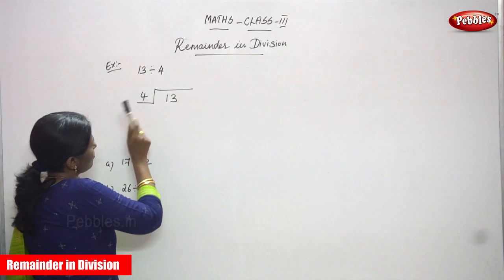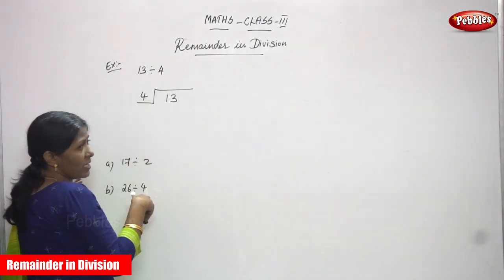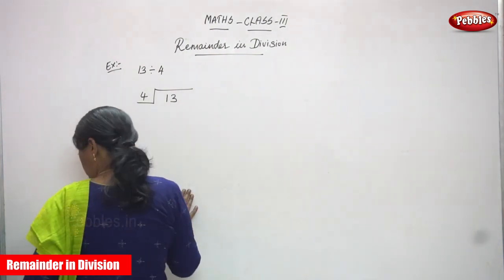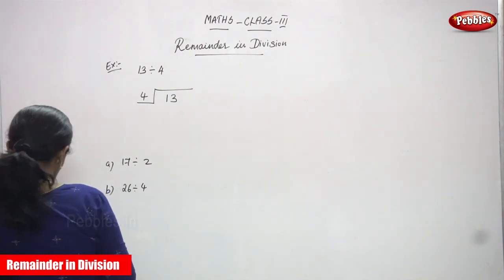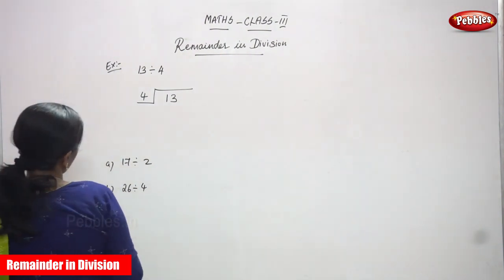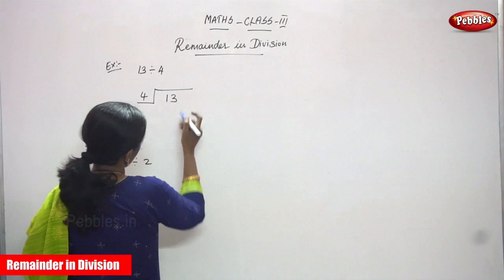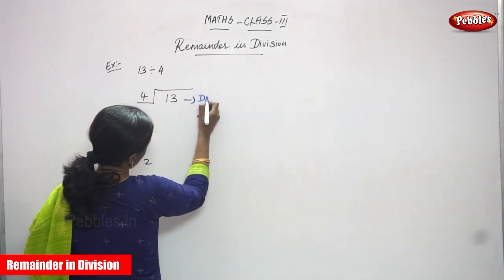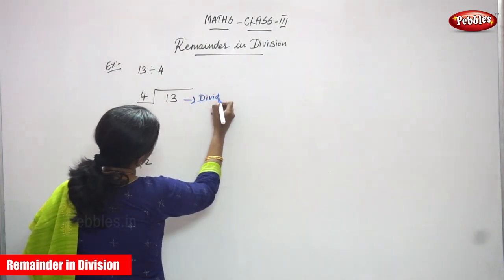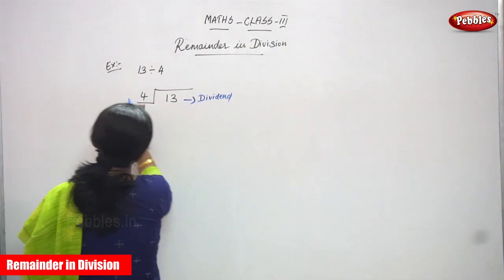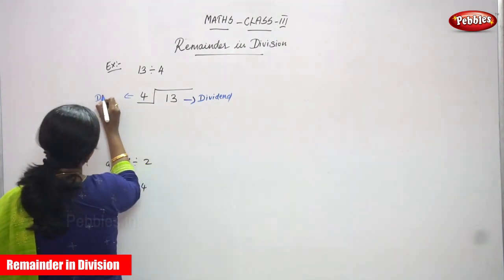So 13 is a dividend and 4 is a divisor. It's a long division method. So 13 — this is the dividend. D-I-V-I-D-E-N-D. Dividend. And this is a divisor. Divisor.